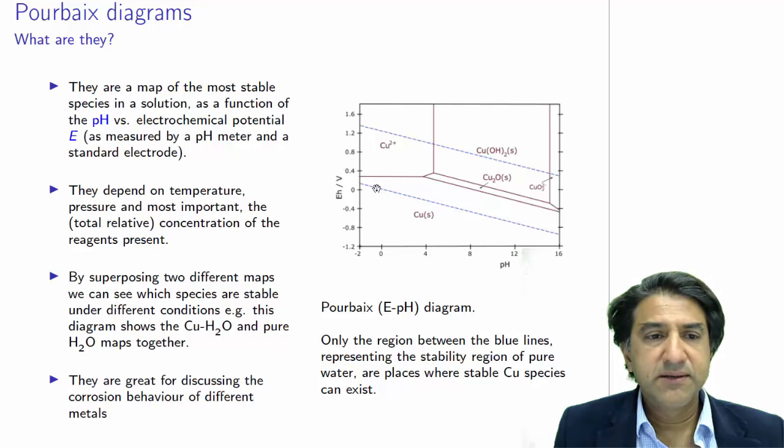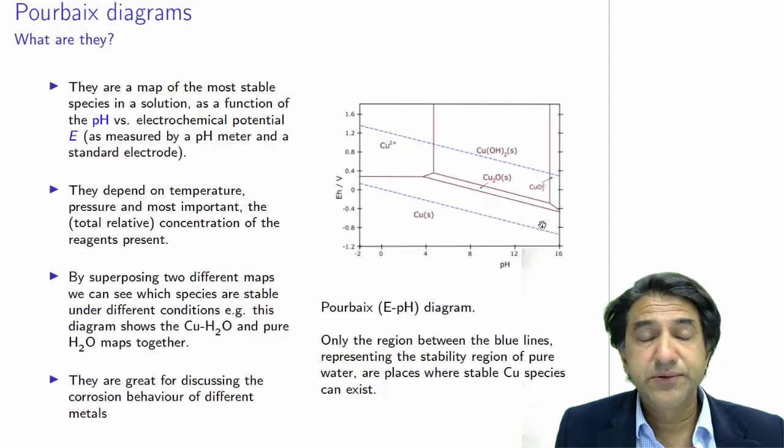These blue lines here, the top blue line and the bottom blue line, represent the stability field of water. If we have a voltage above this line, water is no longer stable. It will generate oxygen. Likewise, if we have a voltage lower than this particular voltage, we will get hydrogen generation. So these regions here represent the region in which species can exist in solution.